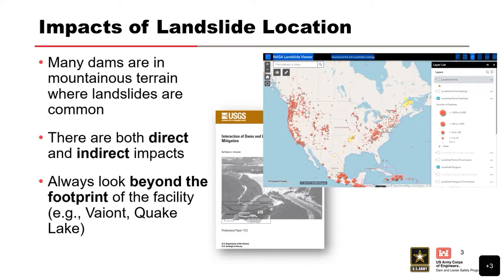You can also have slides that hit the reservoir to create a seiche wave. Indirectly, you can have earthquakes that trigger slides and also damage the concrete structure. Then you have to start worrying about cracks, internal erosion, long cracks, or other issues like that. So those are some of the direct impacts.